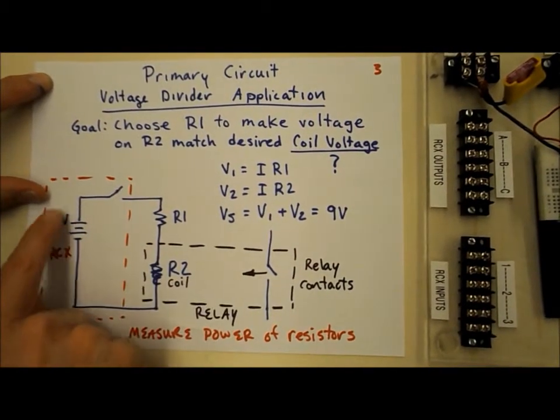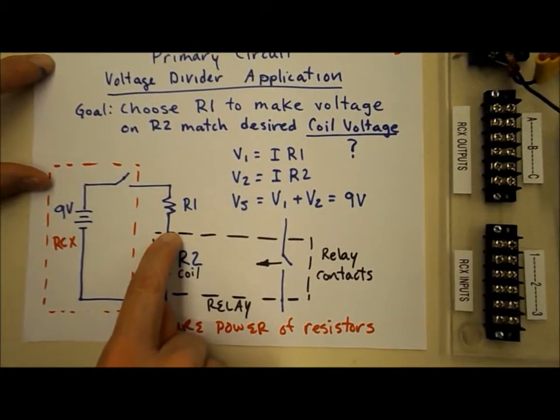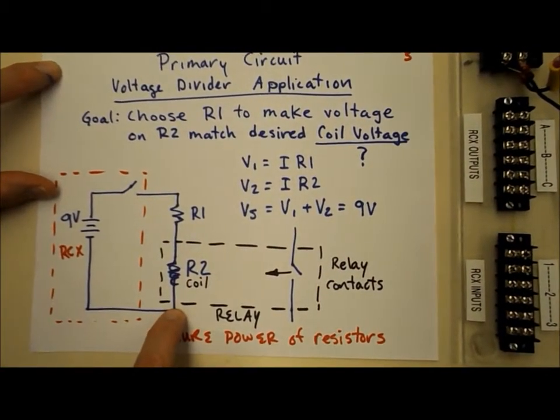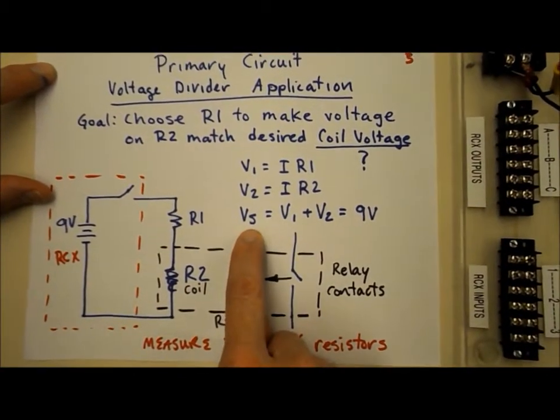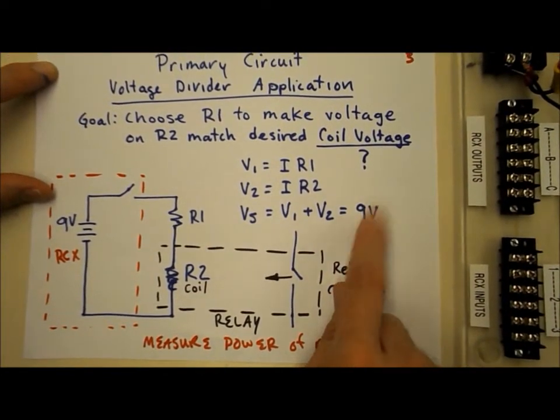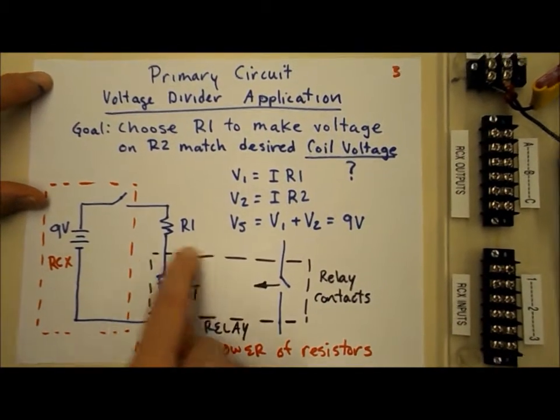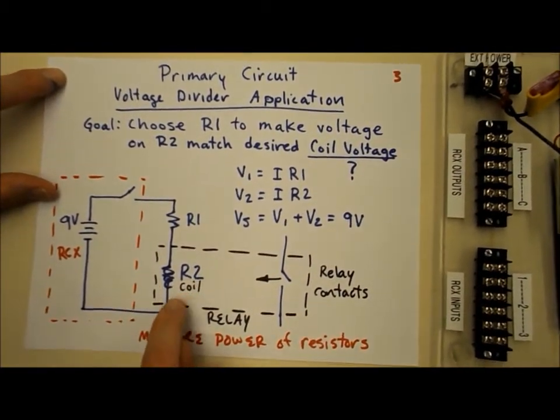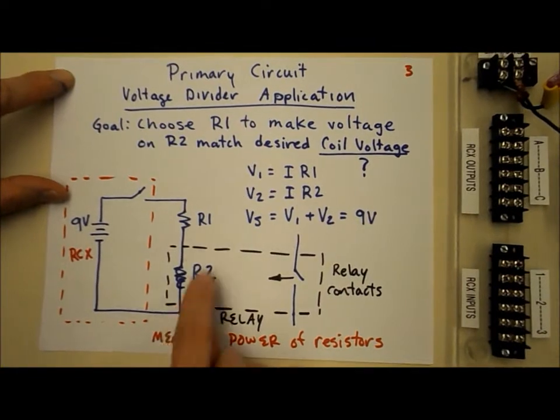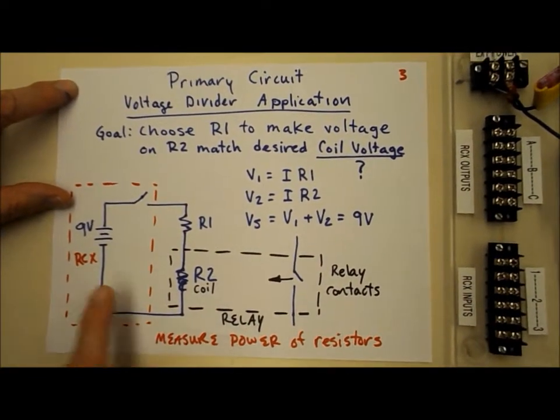If you watch the voltage around the loop, we start with 9 volts, we drop some of it on R1, and we drop the rest on R2. The voltage source is equal to V1 plus V2, and that's 9 volts for us this week. So you'll solve this for R2 and find out what you should be using. You'll be selecting from a group of resistors that we have to create this circuit.